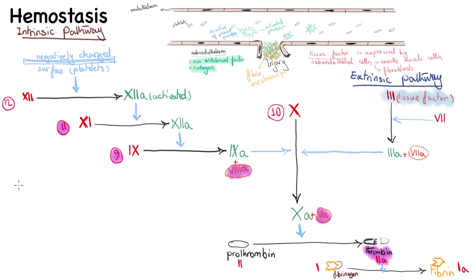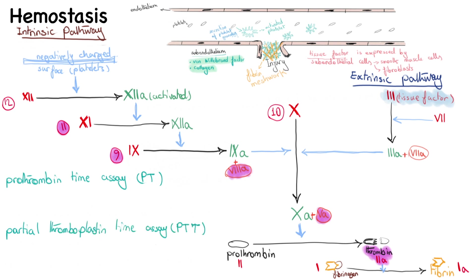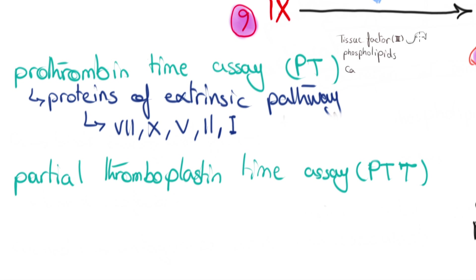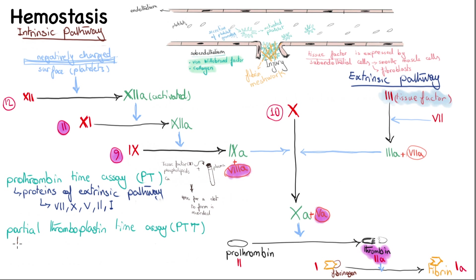Let's look at clinical tests for assessing coagulation. In prothrombin time (PT), we assess the function of proteins involved in the extrinsic pathway: factors 7, 10, 5, 2 (prothrombin), and 1 (fibrinogen). Tissue factor, phospholipids, and calcium are added to the patient's plasma, and the time for a fibrin clot to form is recorded.